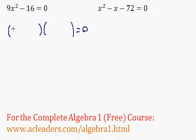The root of 9x squared is just 3x. So I can put 3x over here, 3x over there. And the root of 16 is just 4. So write it plus 4 over here, negative 4 over there.